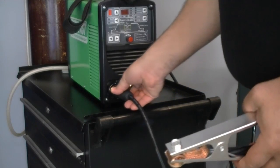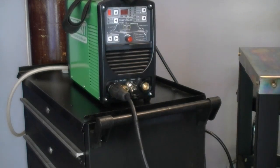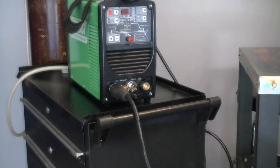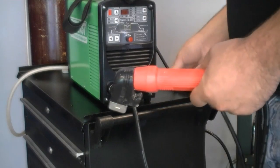For stick operation, the cable connections are reversed. Connect the work clamp to the negative connector and connect the electrode holder to the positive connector.